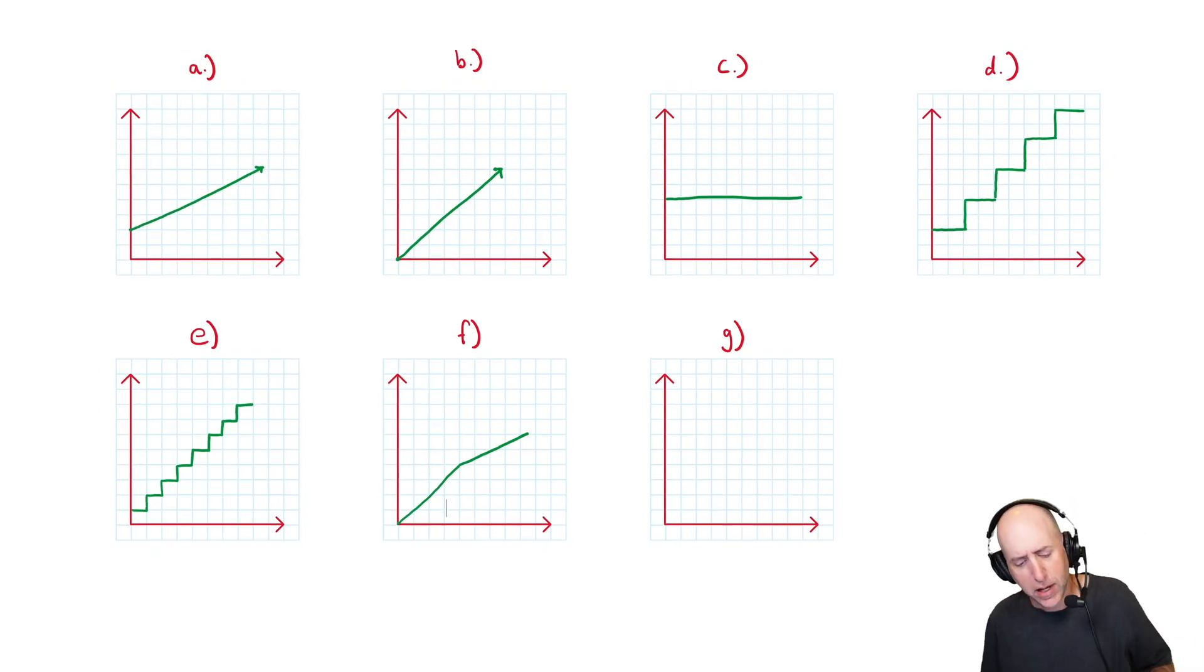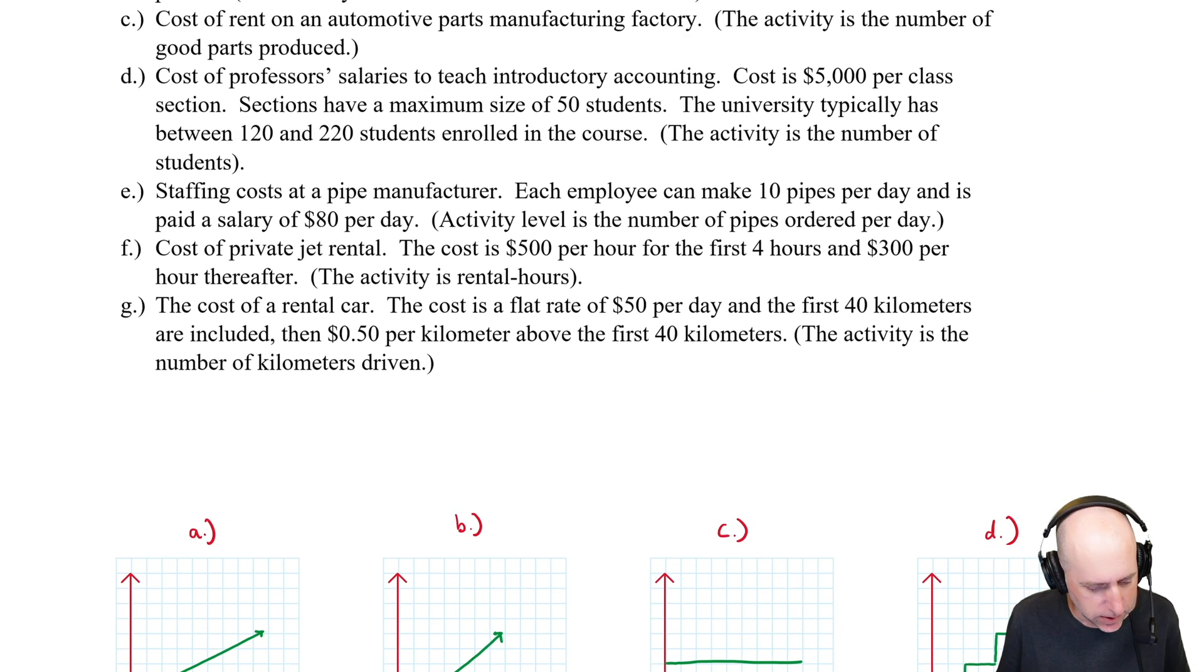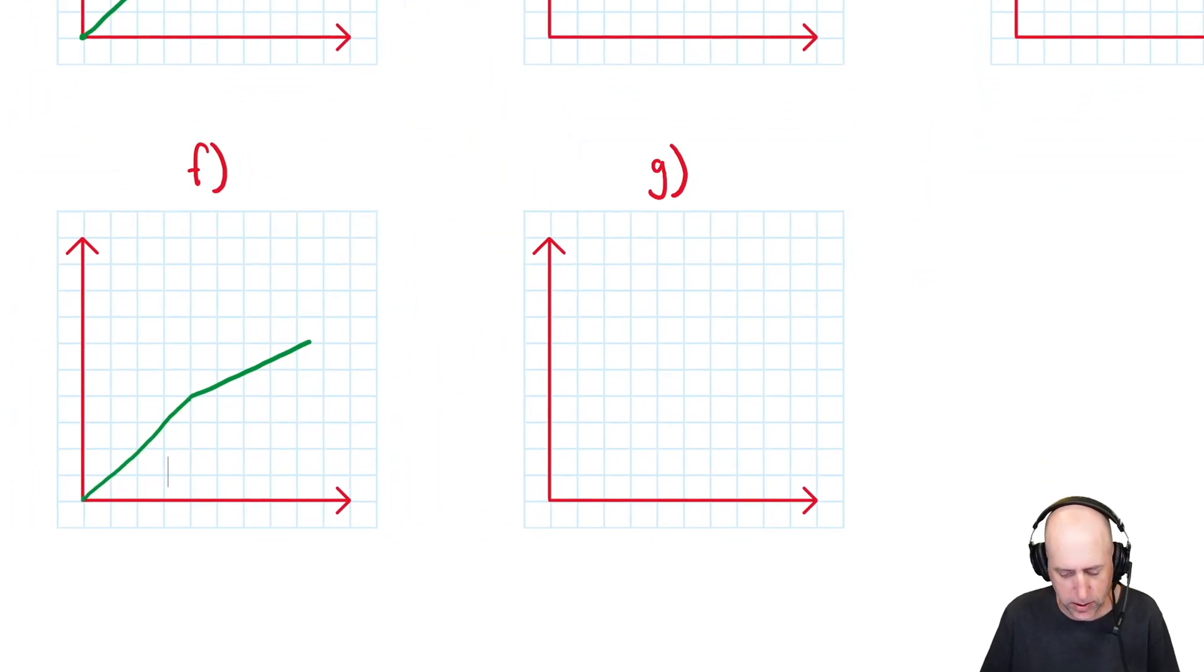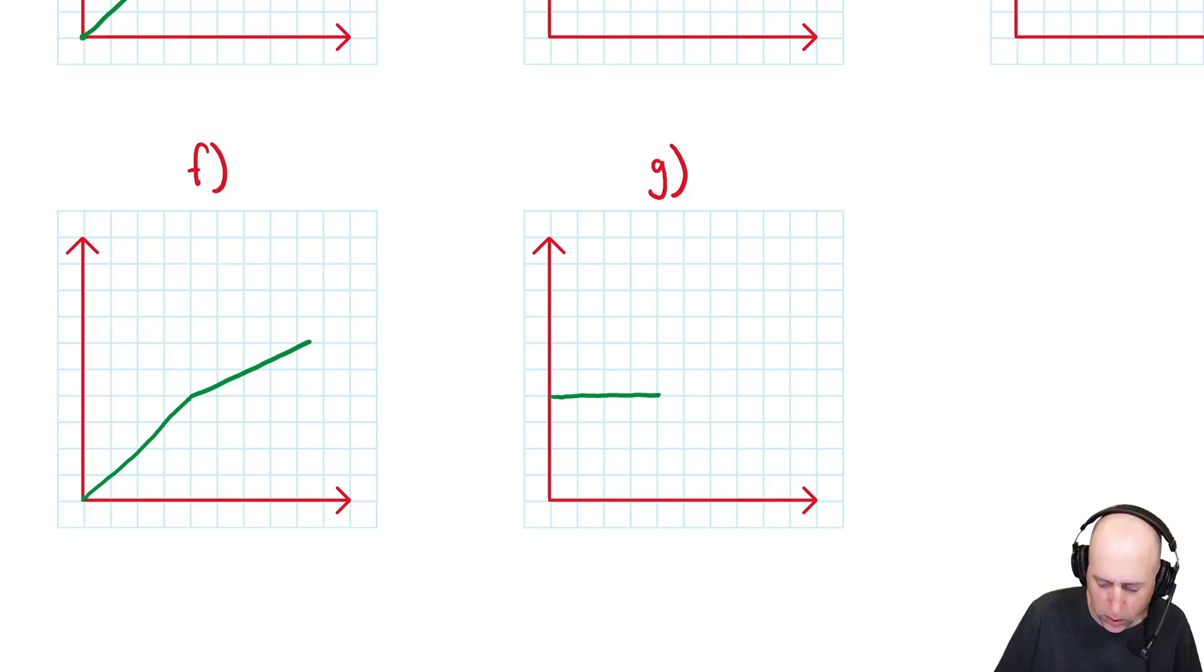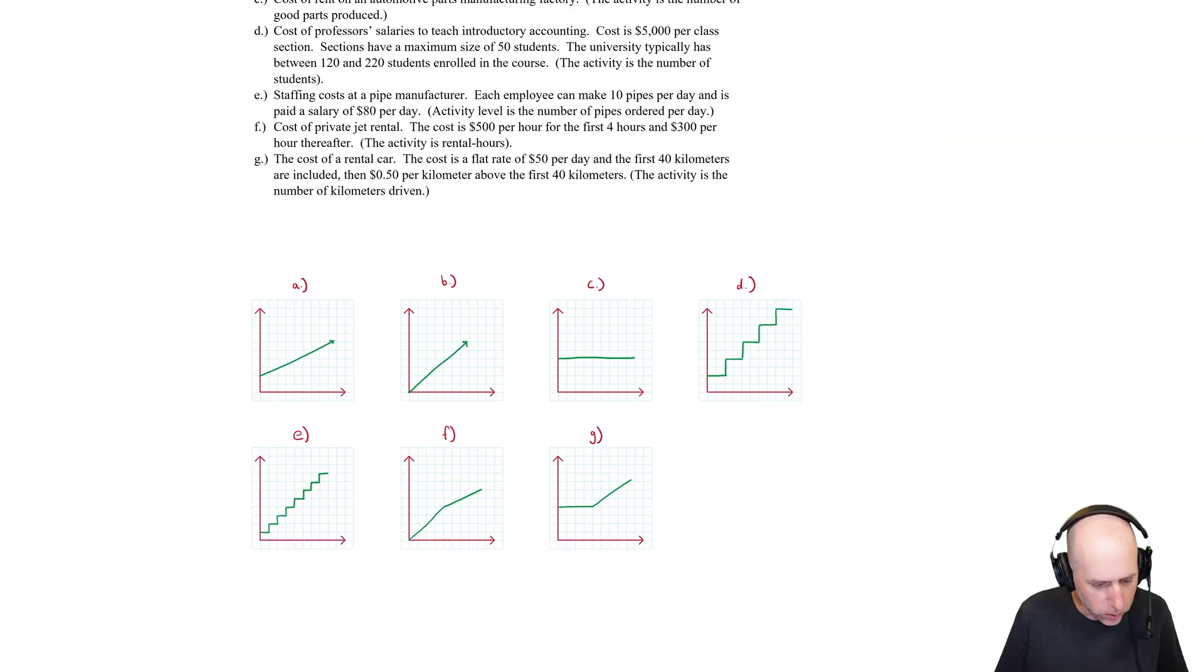Part G: the cost of a rental car. Cost is a flat fee of $50 a day, and the first 40 kilometers are included, then 50 cents per kilometer after the first 40. Okay, so the cost is $50. We're driving along, we're driving along, we're driving along, then we hit some threshold where once we go over we've got to pay per kilometer and it goes like that. And there we have it, we have completed problem 5.1a.